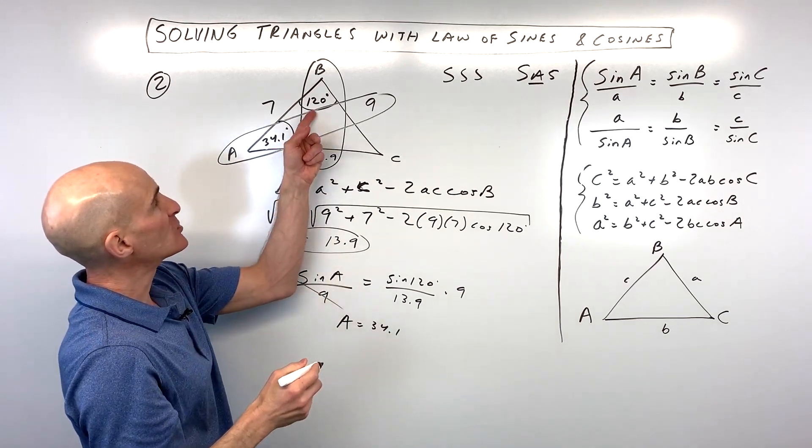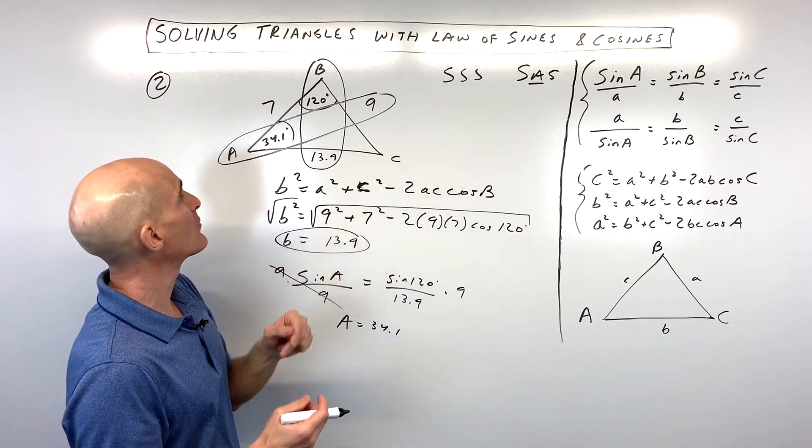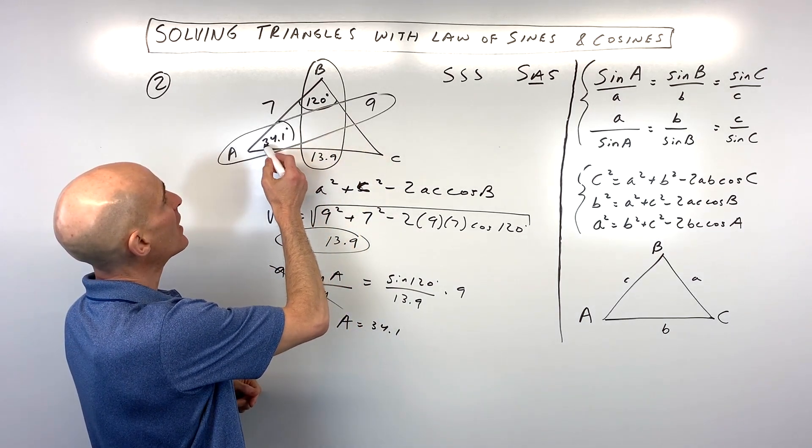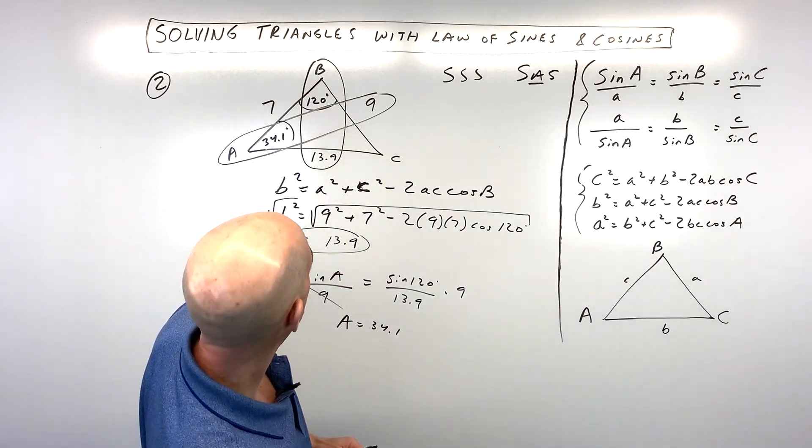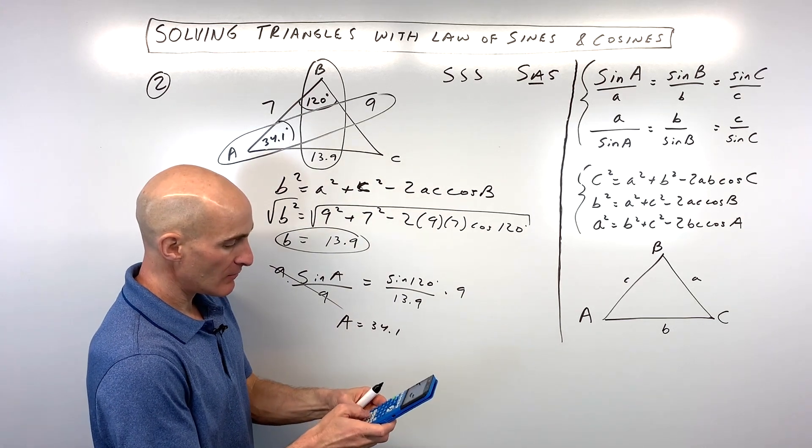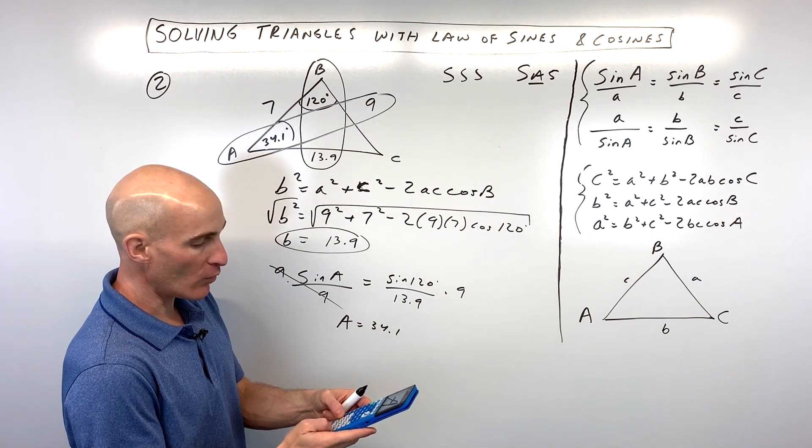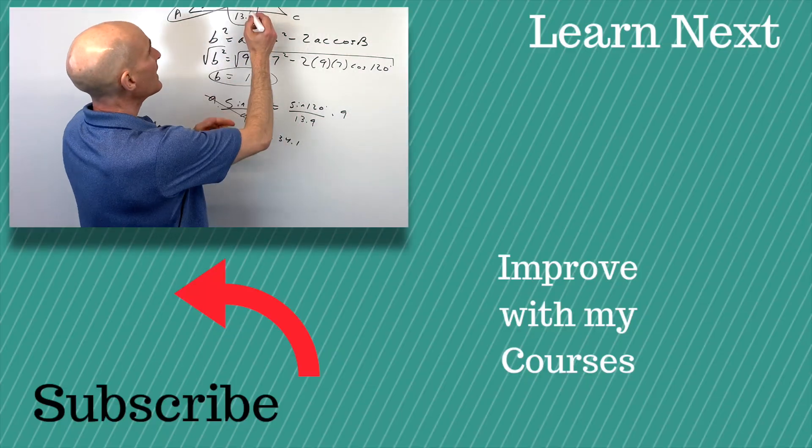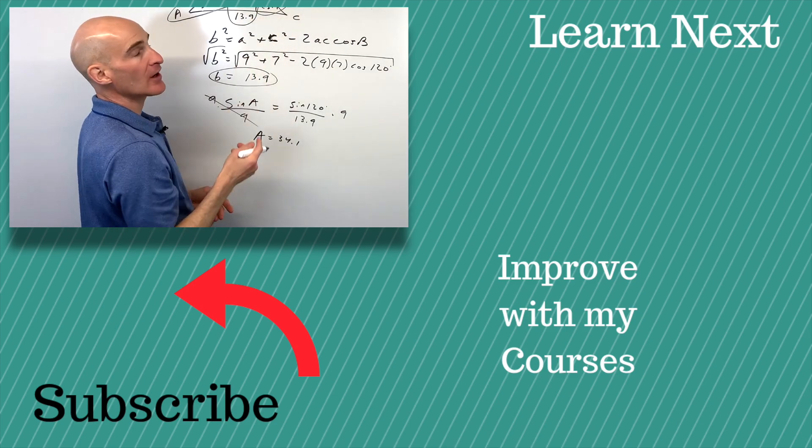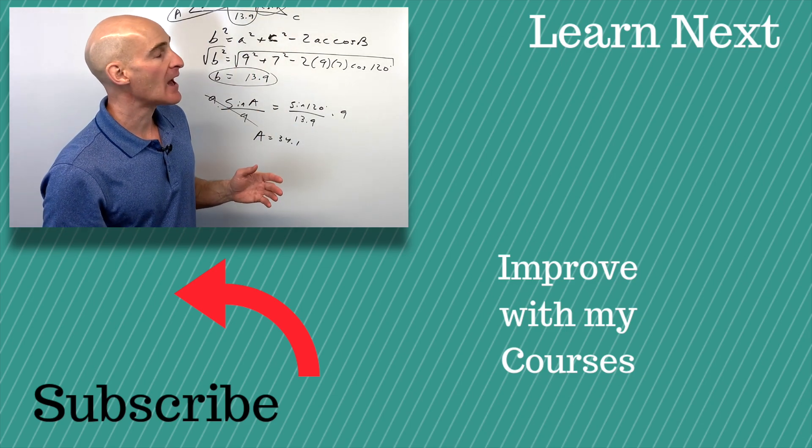Now, you can see we've got two of the angles. To find the third angle, all we have to do is subtract from 180 degrees. Let's see, we get 154.1. So, what's 180 minus 154.1? 25.9. And that's it. So, now you've solved the triangle. You've found all the angles, all the sides, and you've got it.